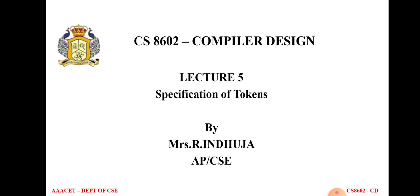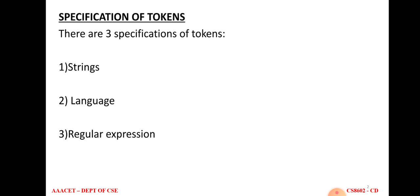In this video we are going to see the topic: specification of tokens. In previous topics we covered the introduction to compilers, the first phase of lexical analysis and its role, and the technique of input buffering. The goal of lexical analysis is to produce tokens. After performing lexical analysis, we get tokens for a source program, which are passed to the next phase — syntax analysis. So in this lecture we will see how we can specify those tokens received from lexical analysis.